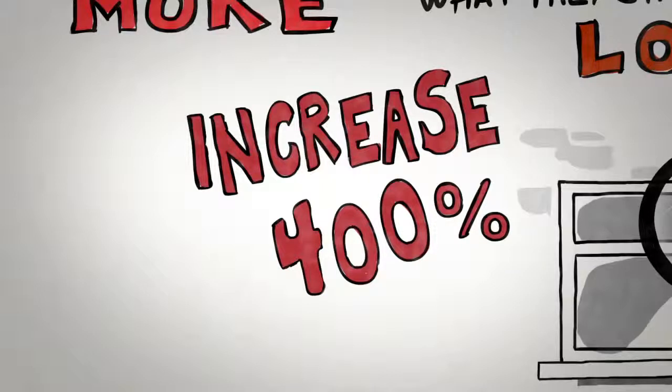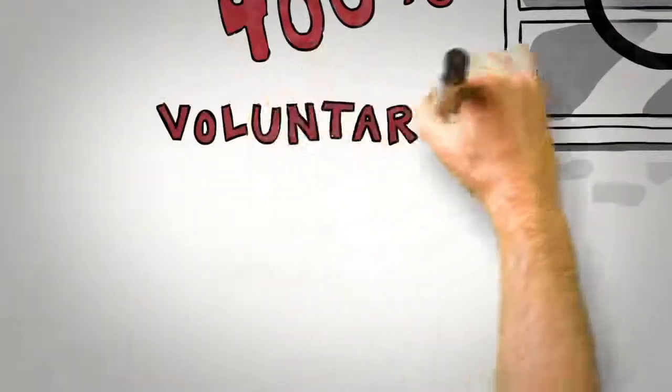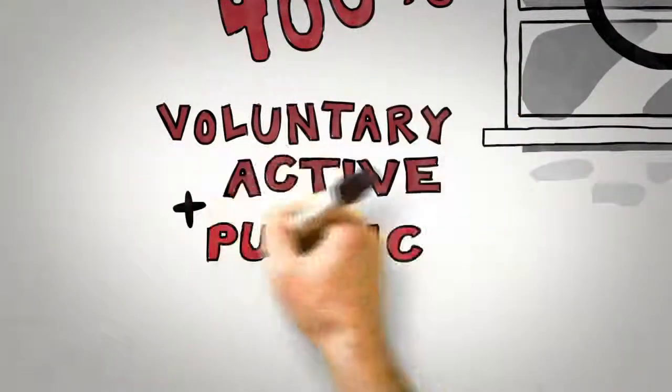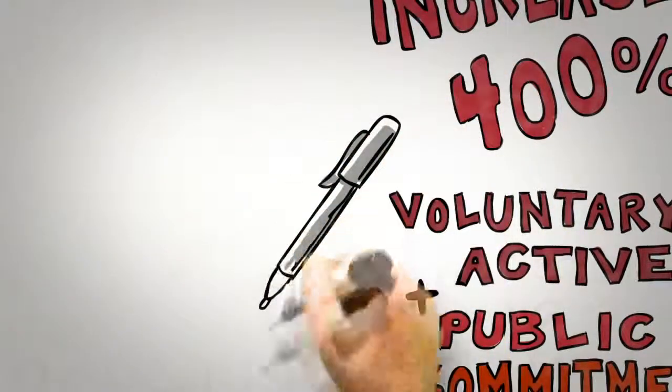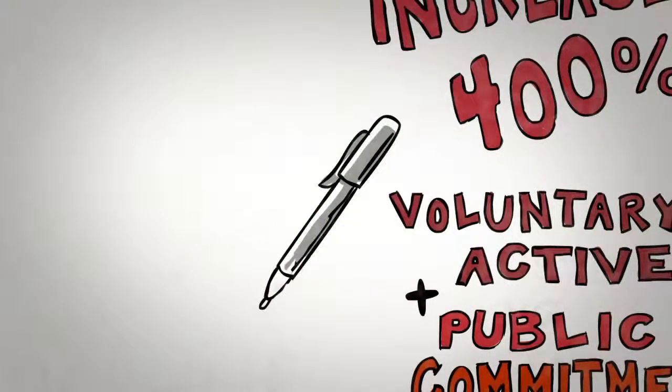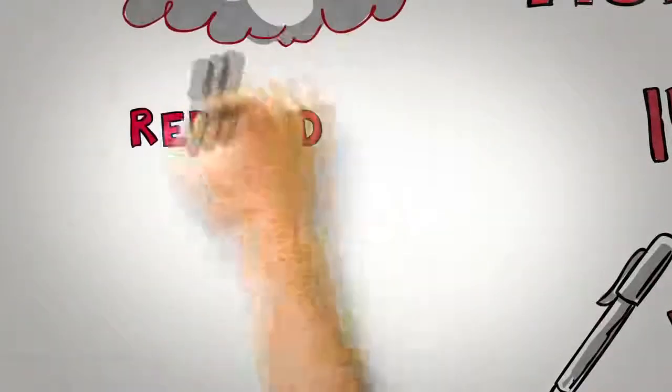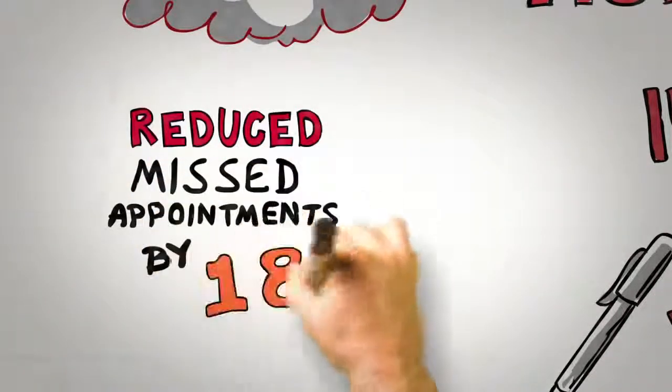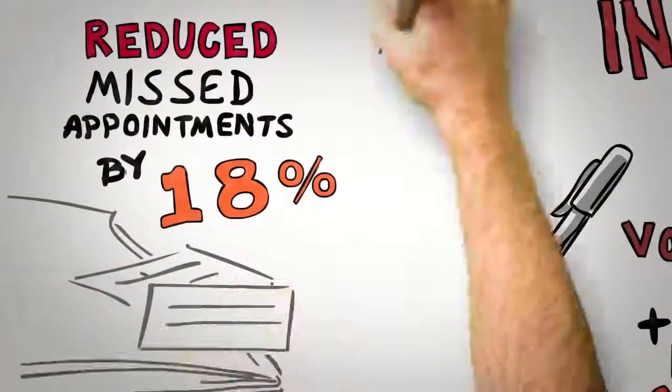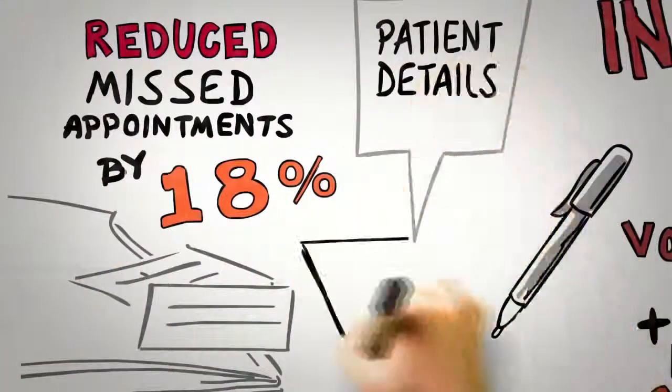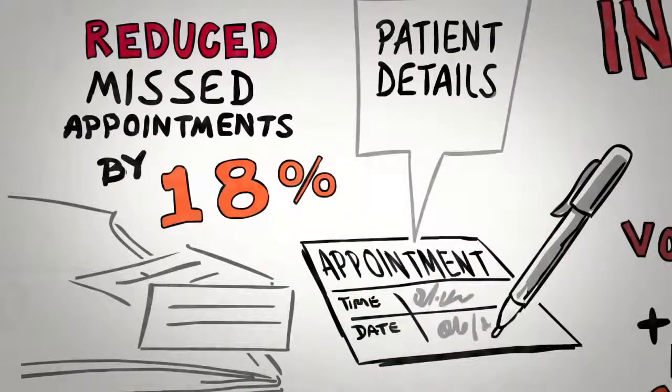So when seeking to influence using the consistency principle, the detective of influence looks for voluntary, active, and public commitments and ideally gets those commitments in writing. For example, one recent study reduced missed appointments at health centers by 18% simply by asking the patients rather than the staff to write down appointment details on the future appointment card.